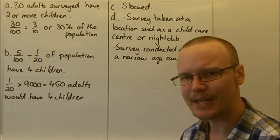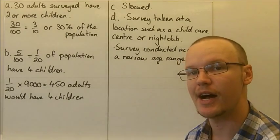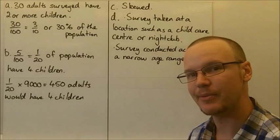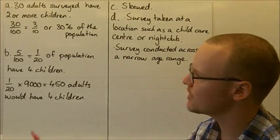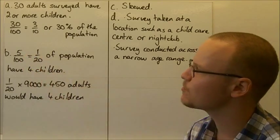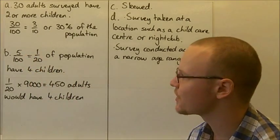Now looking at B, looking at just those that have four children, that was five people said they had four children out of 100, so that's one-twentieth. So if we divide the top and the bottom here by five, that's one-twentieth of the population of four children.